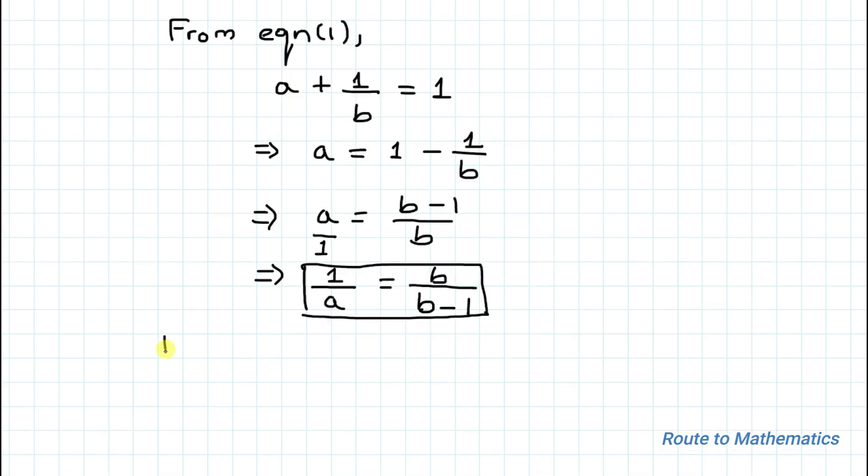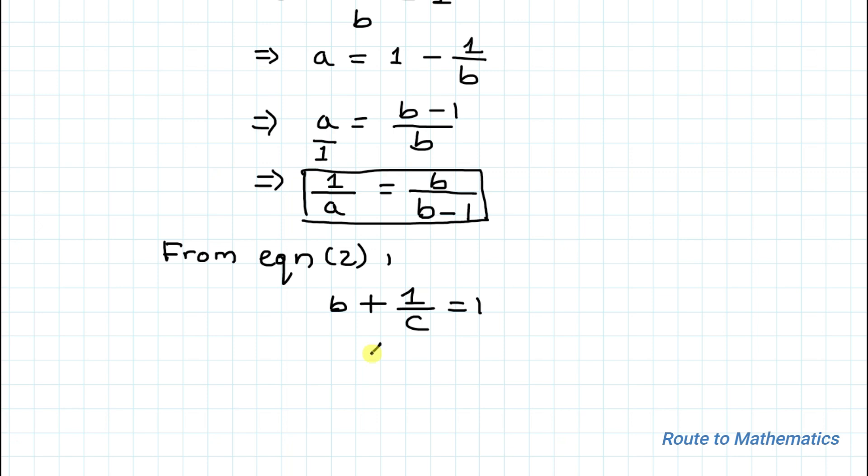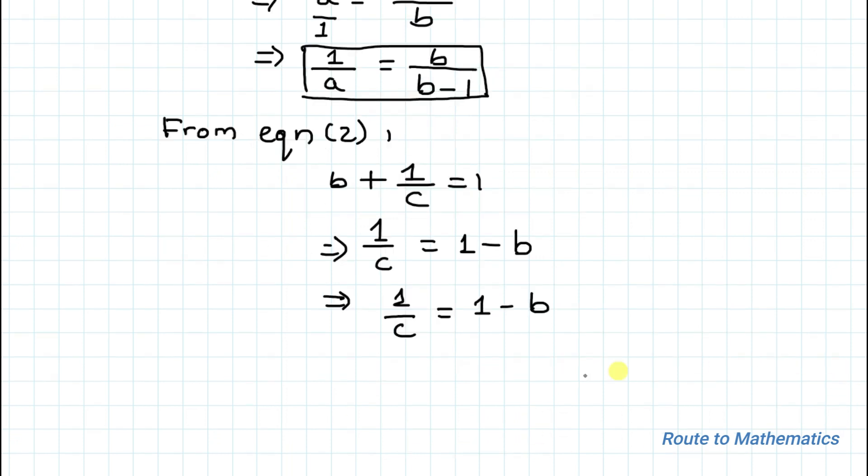Next step is to find the value of c from equation 2. So our equation 2 is b + 1/c = 1. Similarly, 1/c will remain in the left-hand side, and this b will come to the right-hand side and becomes negative, so we have 1/c = 1 - b.